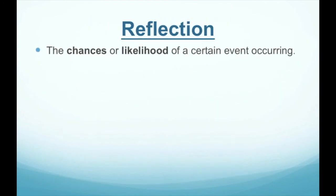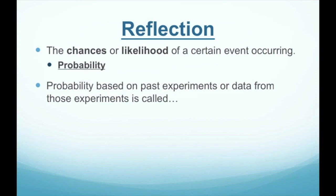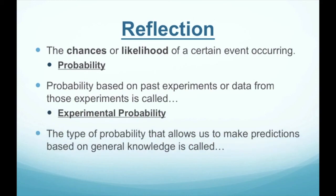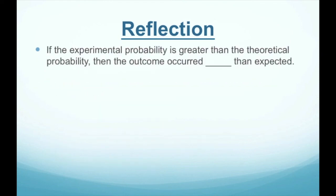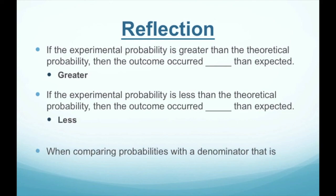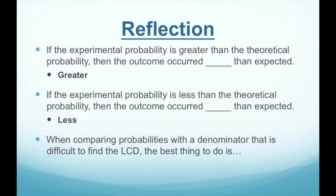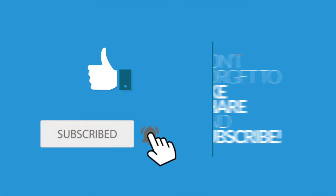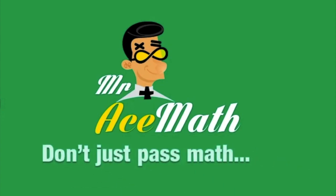Let's review. The chance or likelihood of a certain event occurring is called probability. Probability based on past experiments or data is called experimental probability. The type that allows predictions based on general knowledge is theoretical probability. If experimental probability is greater than theoretical, the outcome occurred more than expected; if less, it occurred less than expected. When denominators are difficult to compare, convert all probabilities to percents. Don't forget to like, share, and subscribe. Thanks for using Mr. Ace Math — don't just pass math, ace it.